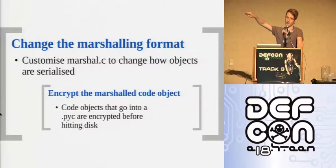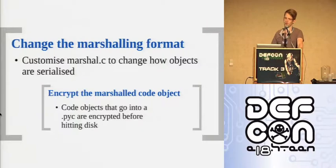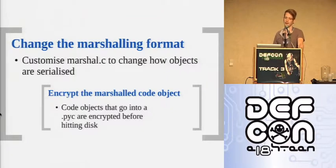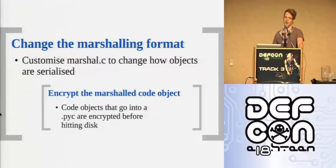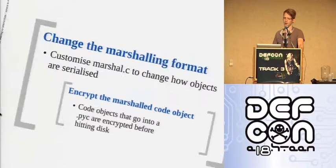Changes to the marshalling format: the marshalling happens in a standard format defined in marshall.c. If they go into marshall.c in the CPython runtime and change how it marshals things, all the standard tools won't understand how to unpack it. They can get arbitrarily fancy — I've seen stuff that looks like encryption. Working out what they're doing at the C layer requires tracing in a debugger for every different type of marshalling modification, which I wanted to avoid.